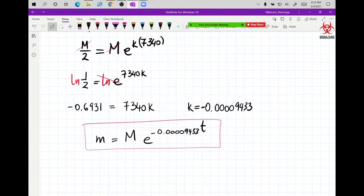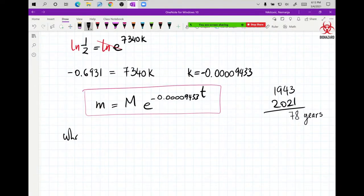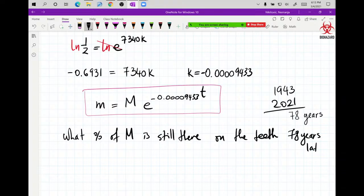So you might want to know, let's say from 1943 to 2021, what's the difference here? Well, 11 minus 3 is 8, and then 11 minus 4 is 7. So 78 years was the timeframe between the Doramad and today. So you want to know what percent of original amount is still there on the teeth, on the corpse's teeth 78 years later, meaning today.